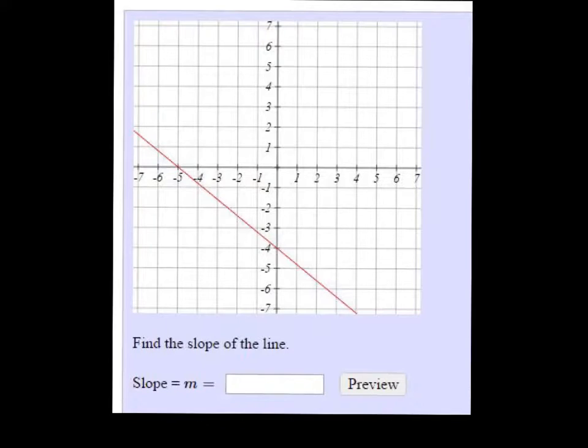I like using the triangle method, and what that is is I pick two exact points on the line. You don't want to try to deal with decimals or anything, but this (-5, 0) point is right on the grid, and this (0, -4) point is also.